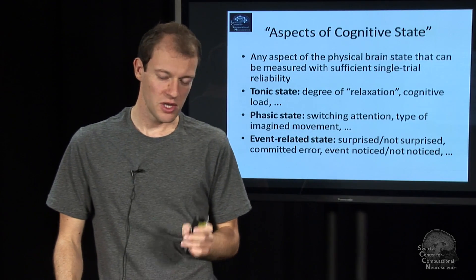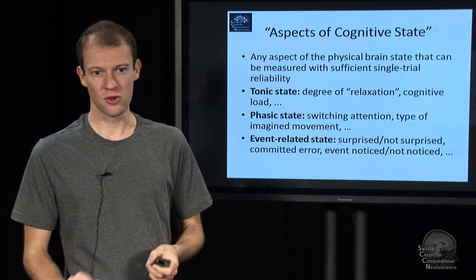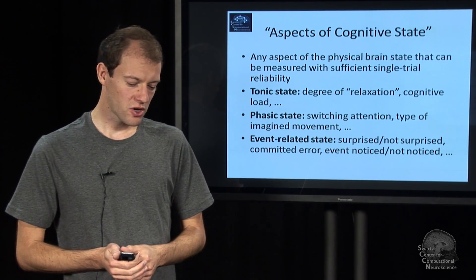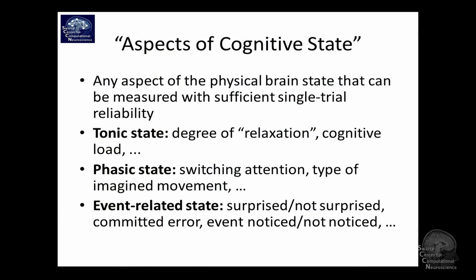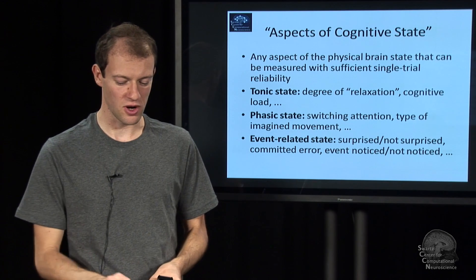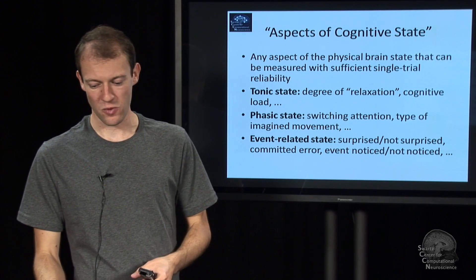And third, there's event-related state, that you could call this phasic state as well. But the important bit here is these are cognitive processes that are linked to a particular event, perhaps an external one, like you saw something, did it surprise you or not? Or you press a button, did you make an error or not? Or did you notice a particular kind of event, and so on? So these usually rely on the presence of an event. So in some way, your BCI has to know that kind of event.